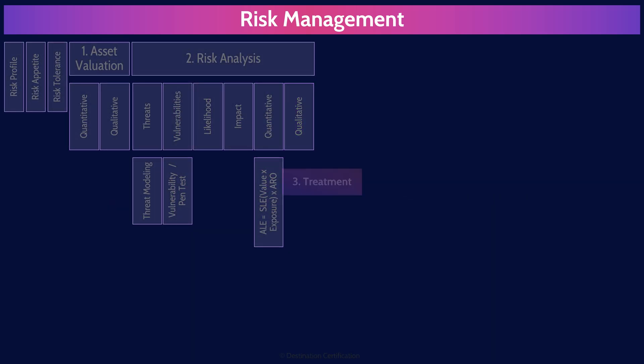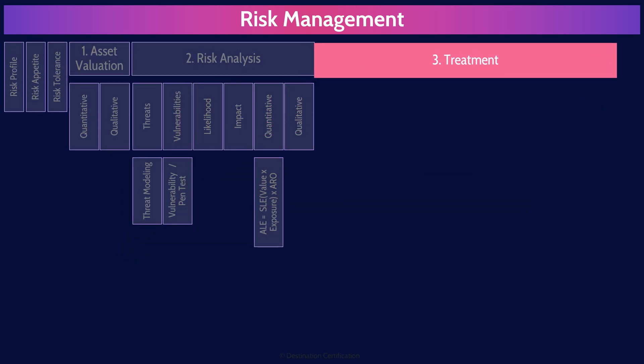This brings us to the third major step in risk management: treatment. Treatment is where we figure out how to handle the risks we've identified — do something about the risks. There are four major treatment methods: avoid, transfer, mitigate, and accept.